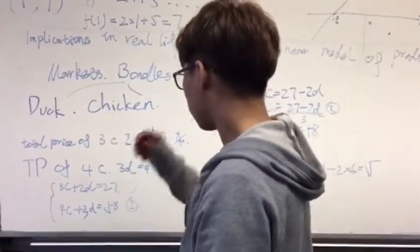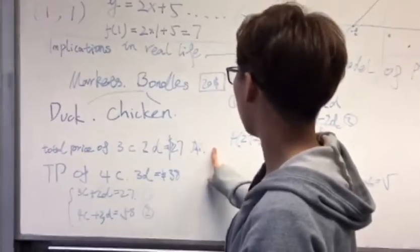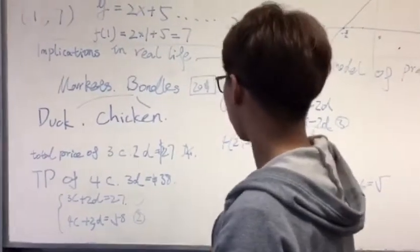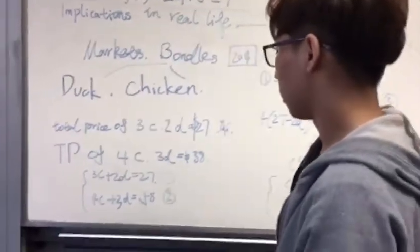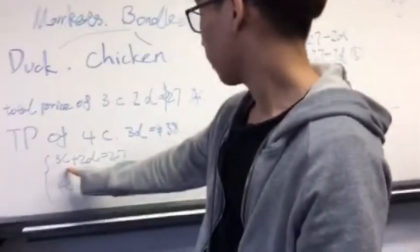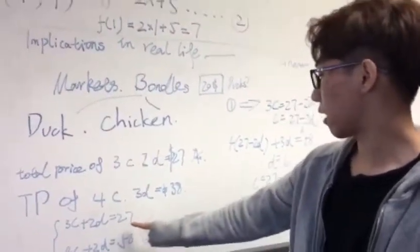We want to find out the single price of ducks, and we have $20. How many ducks can we buy? So we can use an equation here: 3C plus 2D equals 27.